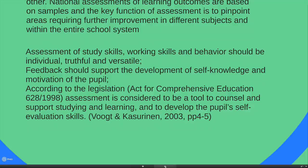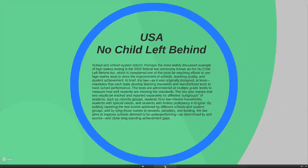In America, we have a very different setup. America is a far bigger and federal system with many states that can do things differently. There's been an attempt to make sure the different states come together where some kind of testing is done to ensure that standards are reached. This became known as the No Child Left Behind policy.